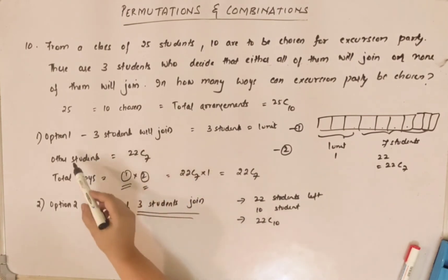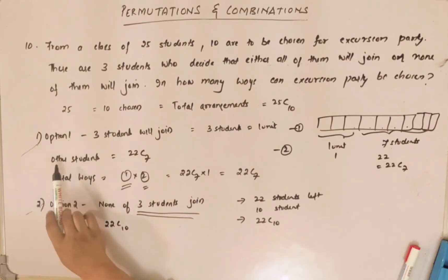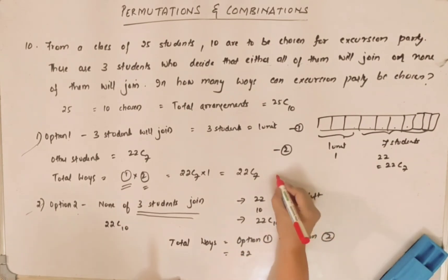So there are two ways or two options for us to choose 10 students for the excursion party. This is option 1, this is option 2. Now we have to use the addition principle because there are completely different options. So total ways would be option 1 plus option 2, which is 22C7 plus 22C10. So this is the answer.